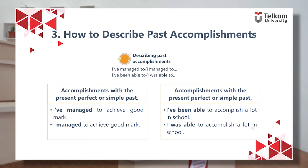Examples using the present perfect or simple past: 'I've managed to achieve a good mark' or 'I managed to achieve a good mark.' Another example: 'I've been able to accomplish a lot in school' or 'I was able to accomplish a lot in school.' Now let's read through the conversation about past accomplishments and practice it.